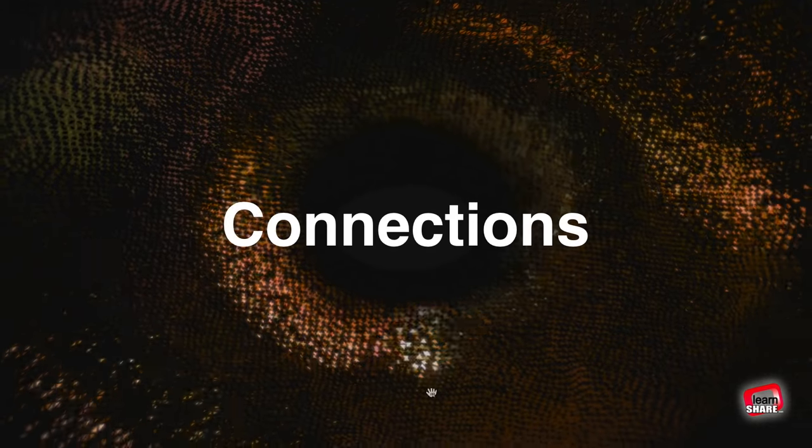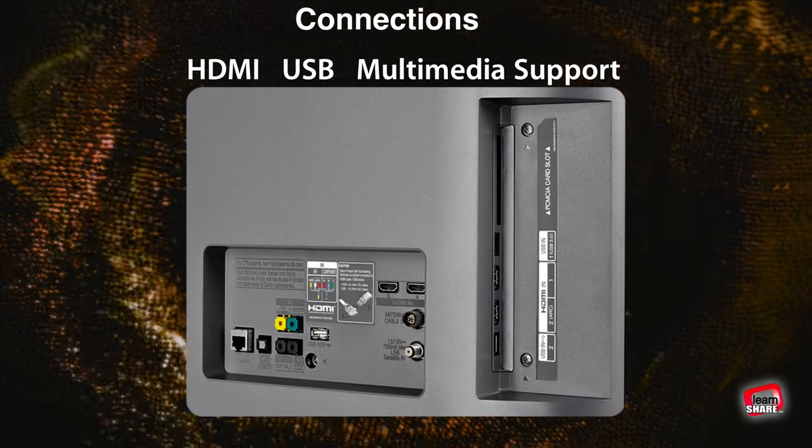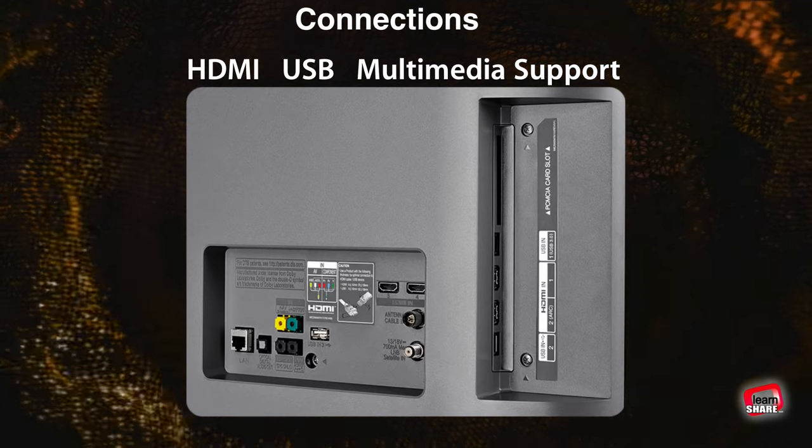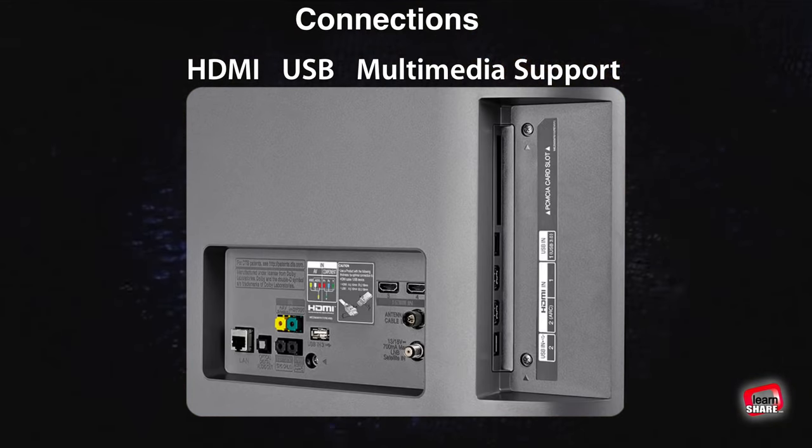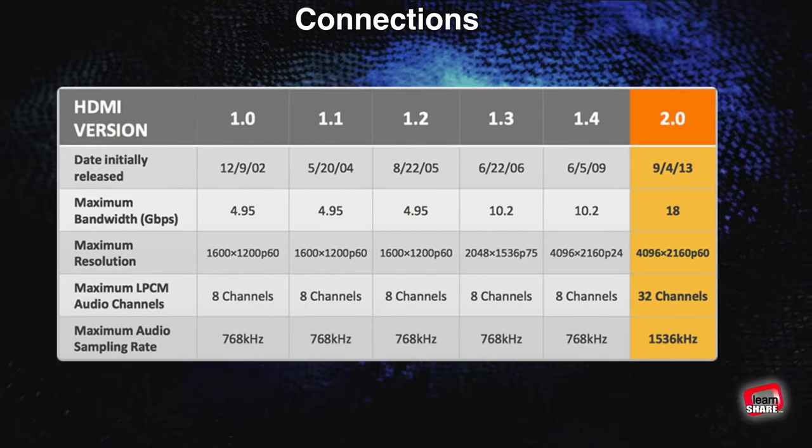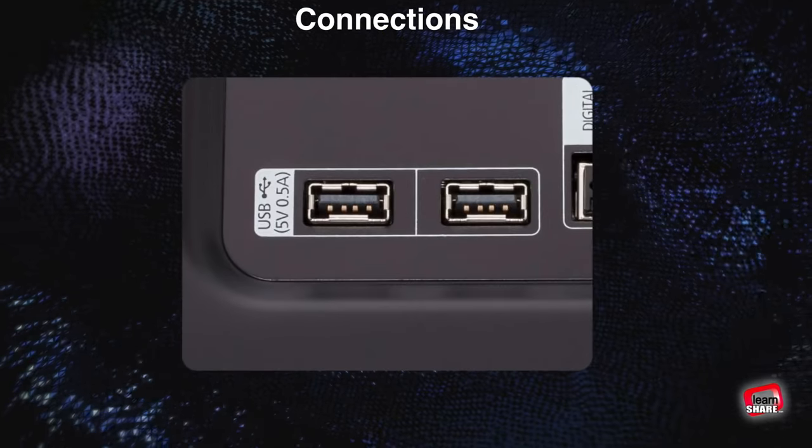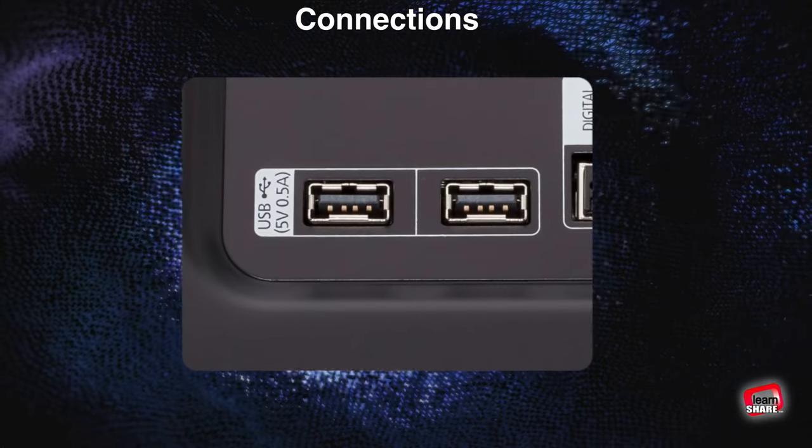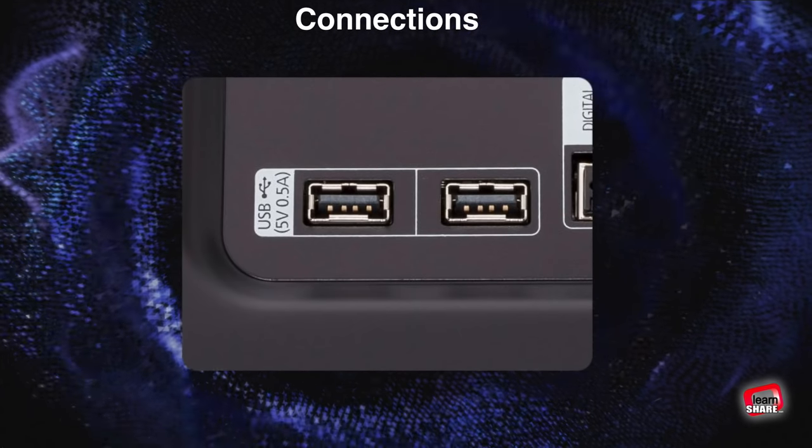These days, main connections are HDMI, USB ports, and multimedia support. With HDMI, try to get at least 3, and with 4K TVs, try to get a TV with HDMI version 2.0 rather than 1.4. USB ports are useful for playing back multimedia. Look for at least 2, ideally 3, but keep an eye on the USB-C type as it will be a standard soon.